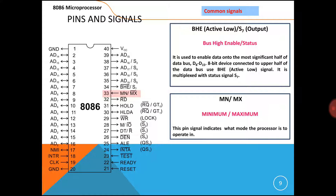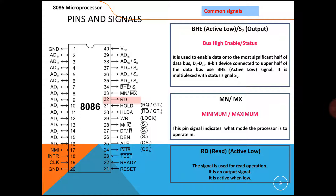Regarding MN/MX: if the logic level is low, the processor is in maximum mode; if high, the processor is in minimum mode. For pins with a bar (overline), the pin is activated when the logic level is zero. RD has a bar, so the read signal is activated at logic low — the processor performs a read operation with I/O devices or memory. Similarly, WR is activated at logic low and the processor performs a write operation.